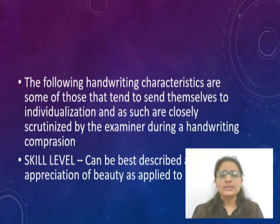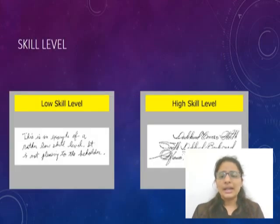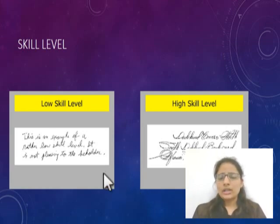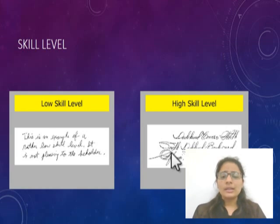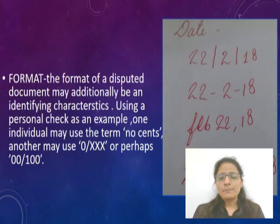Individual handwriting includes several points through which an examiner can be helpful in examining a document. The first is skill level. Skill level is the appreciation of beauty as applied to the writing. A person with a low skill level will write in a common, basic way, while a person with a high skill level will write in a more beautiful manner with better letter execution.